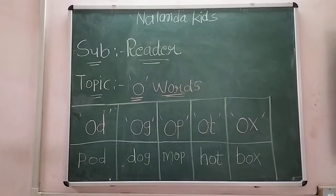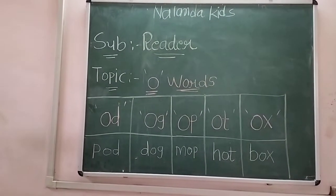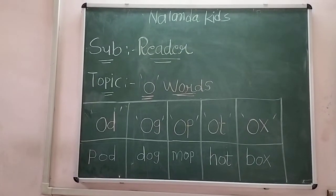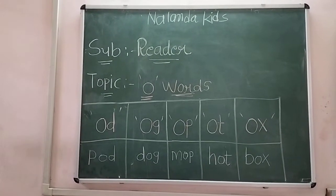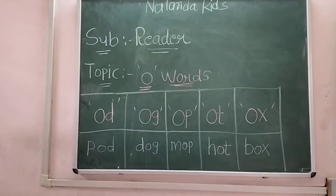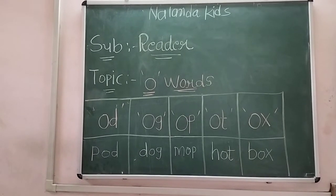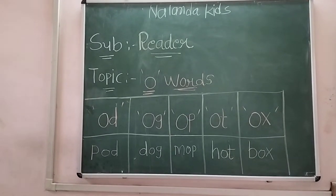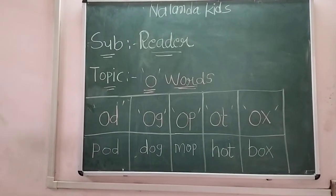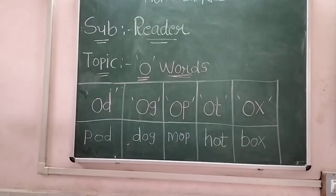Now we will do subject: Reader, topic: O words. हम अभी three letter words learn कर रहे हैं ना kids? आप अभी English subject में भी कर रहे हो। A, E, I, O, U — ये five vowels हैं। तो हमने two letter words में A, E, I complete कर लिया। आज हम O words में पहले two letter words देखेंगे, फिर three letter words देखेंगे।